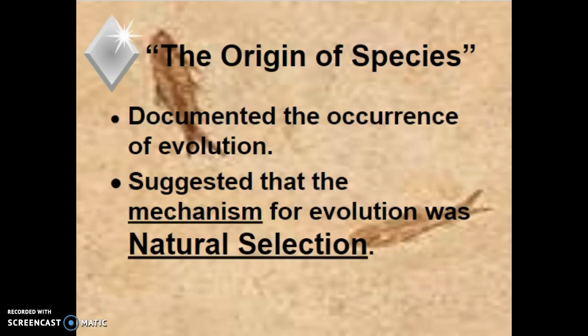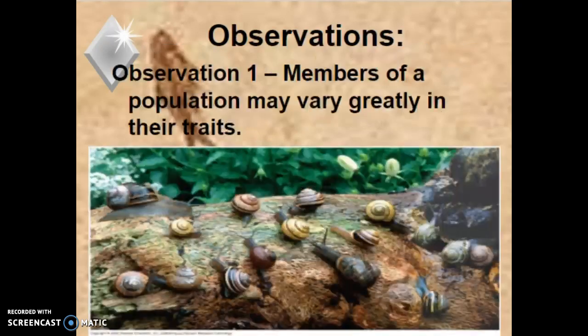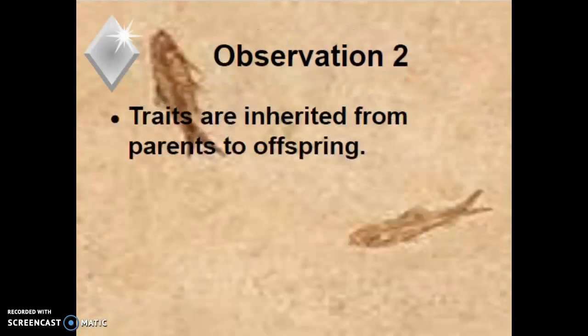On the Origin of Species suggested that the mechanism for evolution was natural selection. It documented the occurrence of evolution and showed how organisms can change over time. Darwin made a couple of observations and inferences. His first observation is that members of a population vary greatly in their traits — these snails all have different phenotypes in their shell. Think about all the people or dogs you know — members of any population are going to have a lot of differences in their traits.